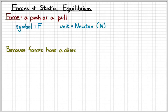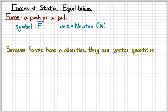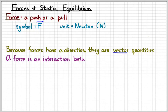So because forces have a direction, that means that they are vector quantities. So really we should write the force symbol F with a little vector arrow above it. A force is an interaction between two objects. You can't have a force without something to apply the force, and you can't have a force without something to receive the force. In other words, you can't push on nothing, and so a force requires two objects — that's how objects interact with each other.